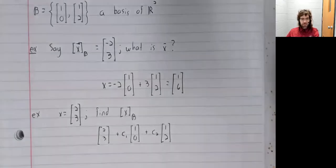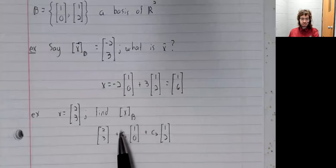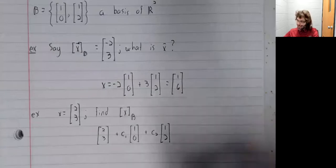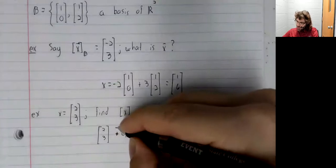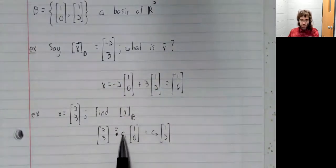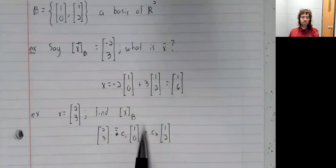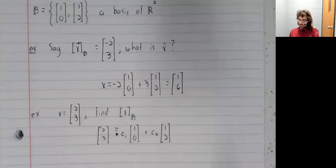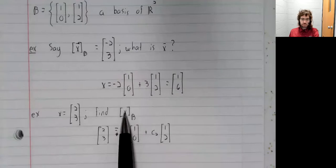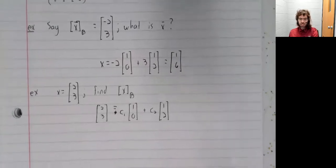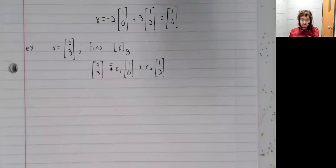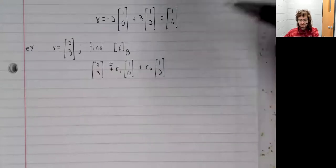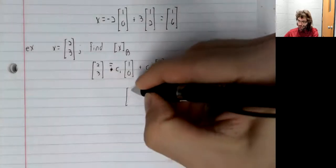So there are unique numbers, c1 and c2, such that this equality is true. And c1 and c2 are the entries of the coordinate vector. So to find the coordinate vector, we need to solve this vector equation.